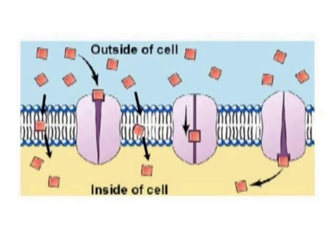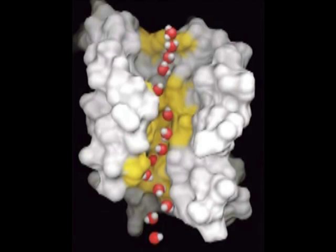This diagram shows us the movement of water through special proteins called aquaporins. Aquaporins are proteins through which water moves via active transport as well as passive transport. This is a model of an aquaporin — water molecules move through the center of the aquaporin, as clearly shown in this diagram.